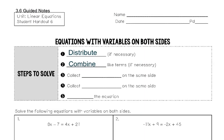If you can't simplify anything, then we have to move on to step three, and this is the most important step — this might be the new thing. We have to collect our variables on the same side. There's an x on both sides of the equation in our example, so we're just going to pick a side to put it on.